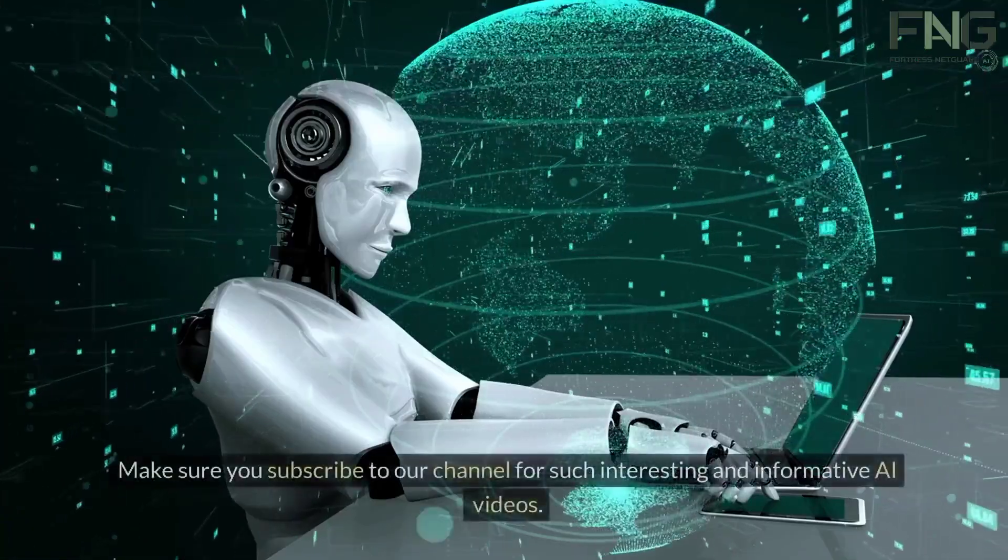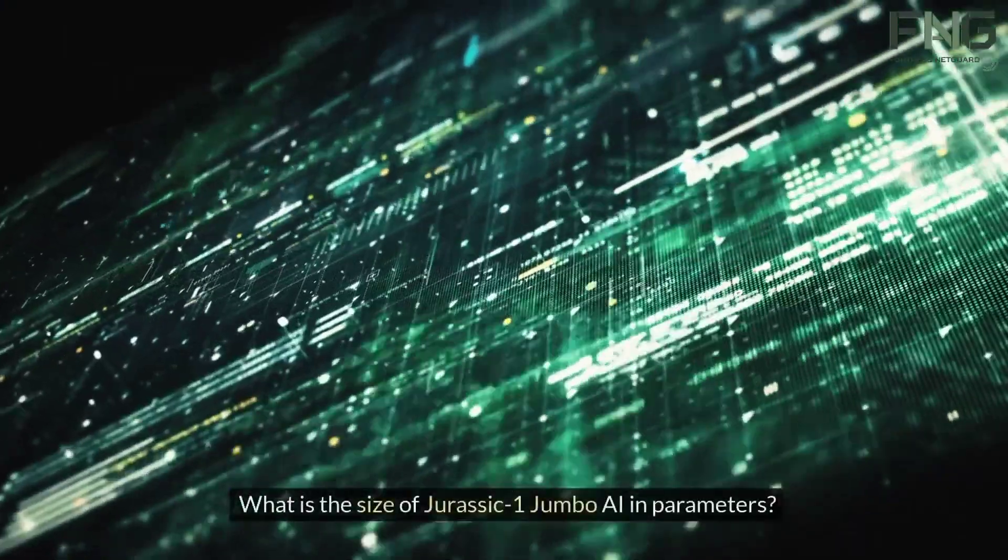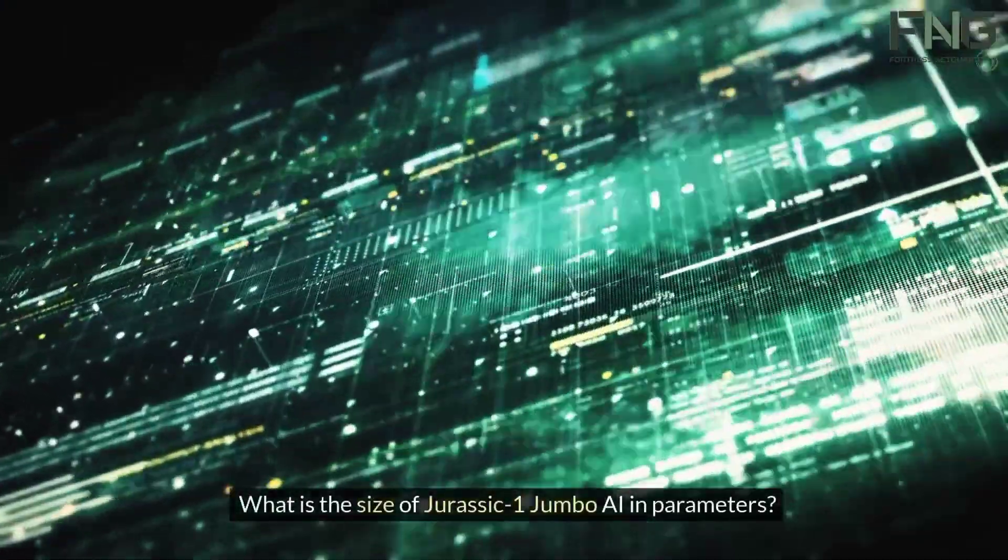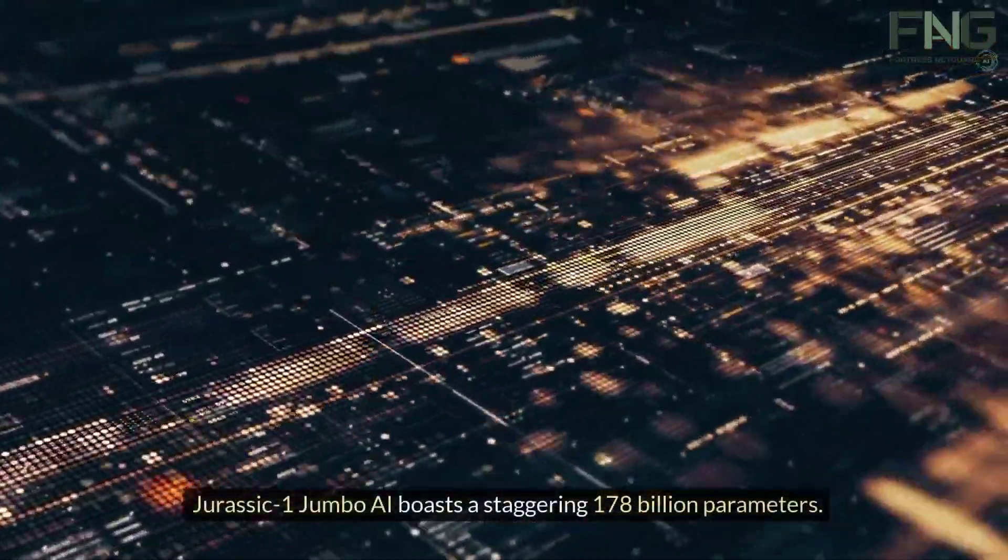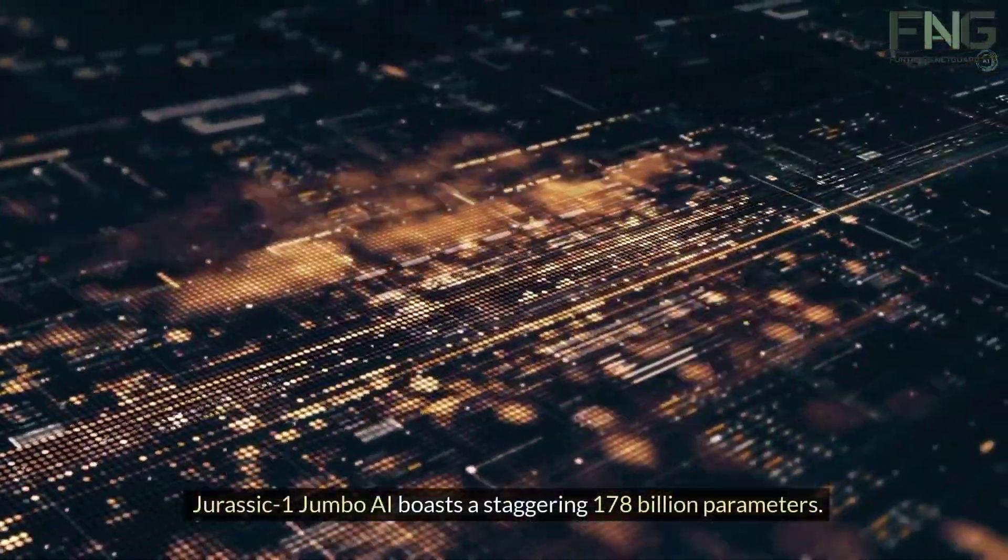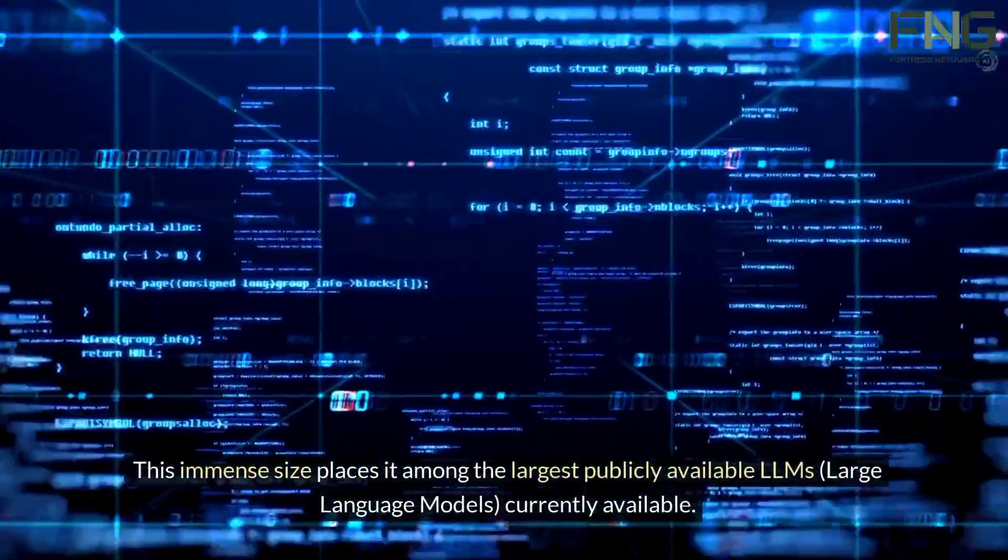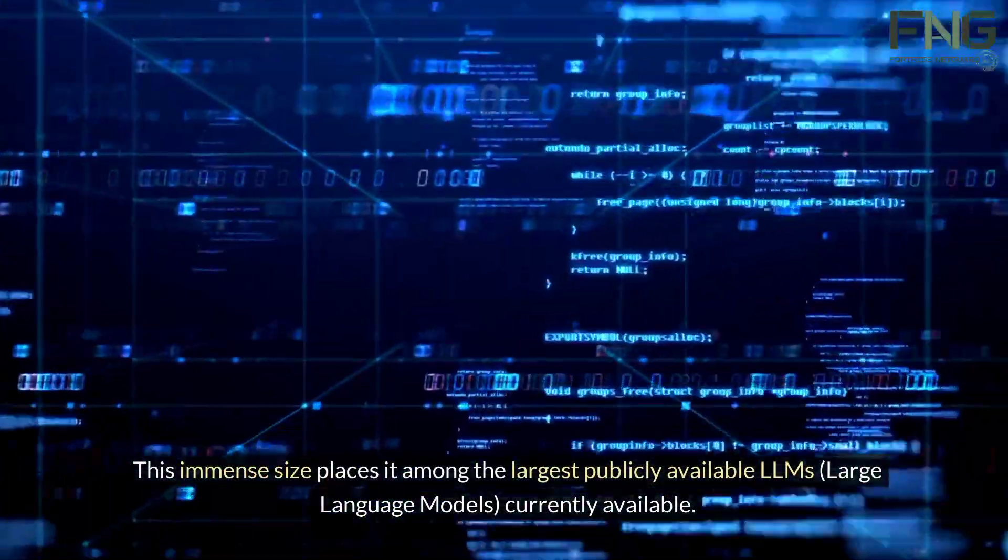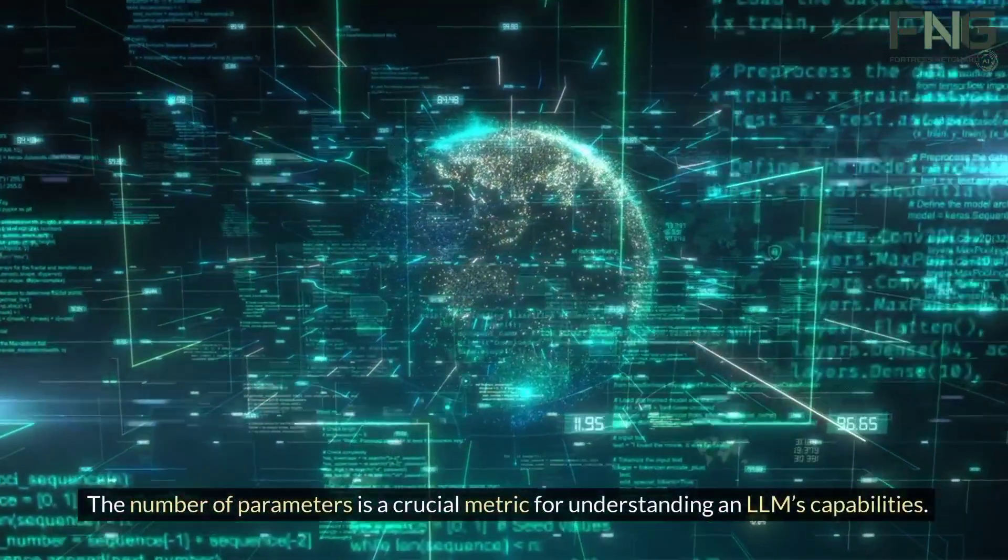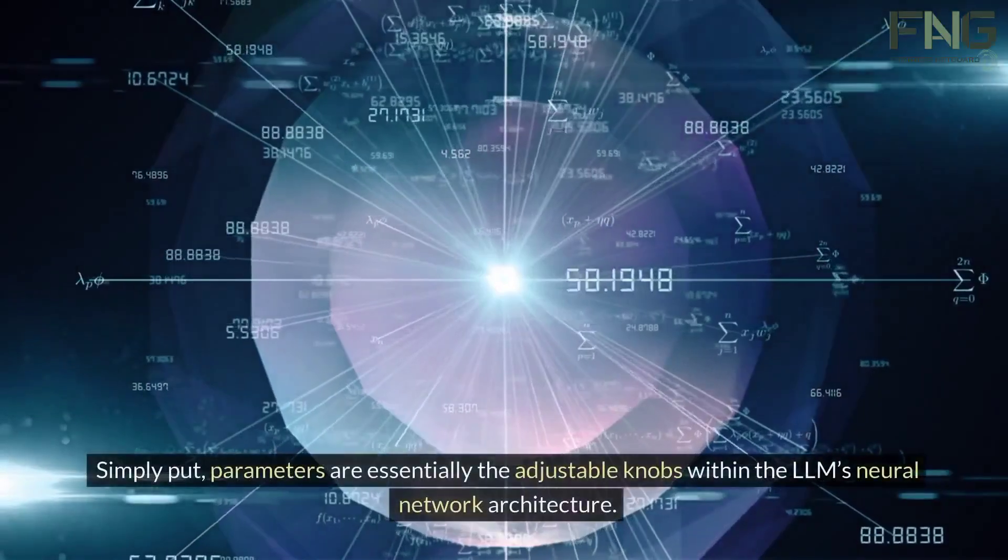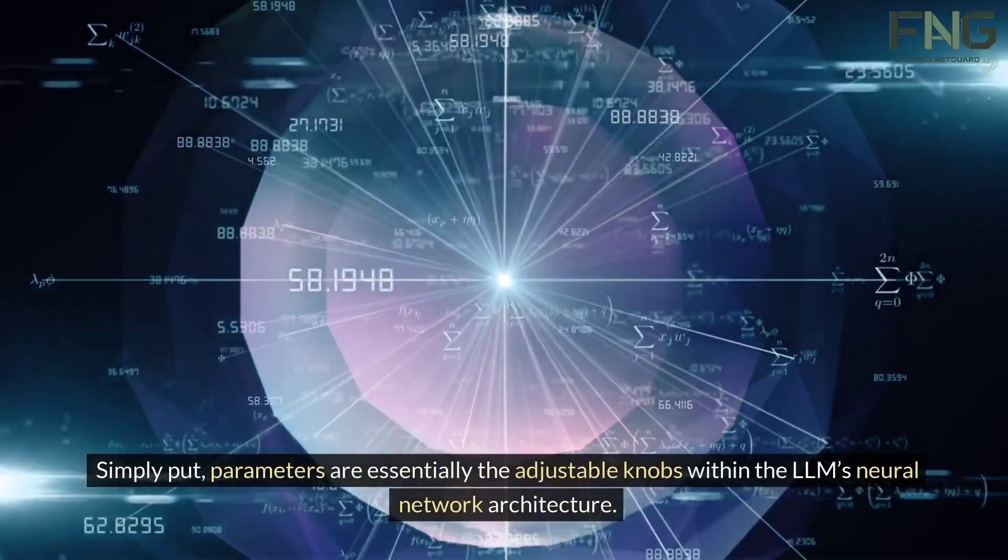Make sure you subscribe to our channel for such interesting and informative AI videos. What is the size of Jurassic-1 Jumbo AI in parameters? Jurassic-1 Jumbo AI boasts a staggering 178 billion parameters. This immense size places it among the largest publicly available LLMs currently available. The number of parameters is a crucial metric for understanding an LLM's capabilities. Simply put, parameters are essentially the adjustable knobs within the LLM's neural network architecture.